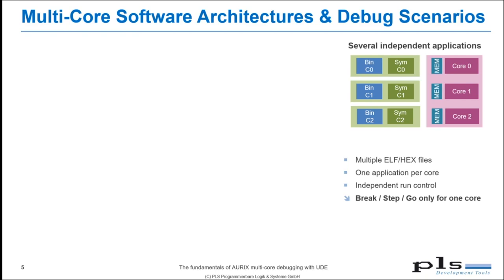The simplest scenario is a single-core application, or multiple single-core applications, ported to a multi-core system. Each single-core application uses one specific core, comes with its own ELF file, and is assigned to that core. Between these applications there are only minimal or no dependencies. Debugging in this case is focused on only one core at a time, so all debug actions — especially run control like braking, single-stepping — should be performed only on the core in focus.